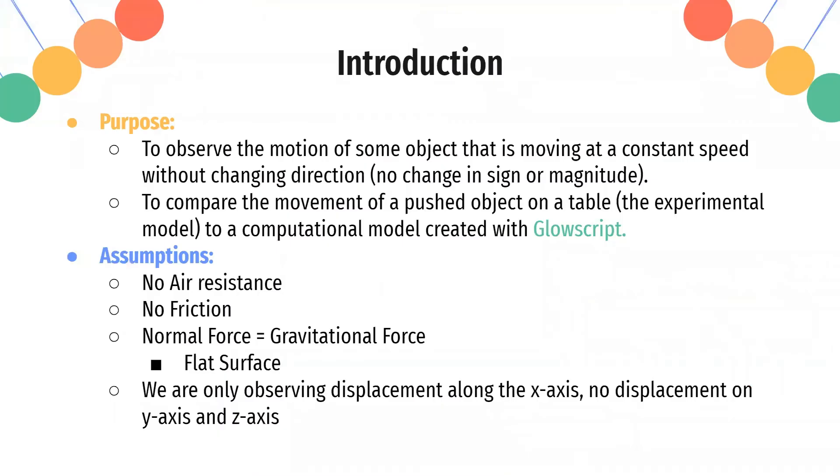To introduce this lab, the purpose of it is to observe the motion of some object that is moving at a constant speed without changing directions. This means there's no change in sign or magnitude - that is constant velocity. We want to compare the movement of this object on the table, which counts as the experimental model, to the computational model created by the physical environment simulation, Glowscript.